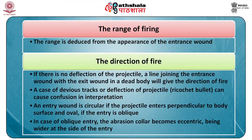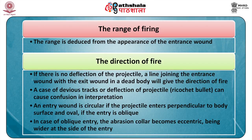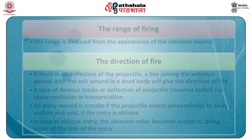The range of firing is inferred from the appearance of the entrance wound. Regarding the direction of fire: if there is no deflection of the projectile, a line joining the entrance wound with the exit wound in the dead body will give the direction of fire. Devious tracks or deflection of the projectile, as in a ricochet bullet, can cause confusion in interpretation. An entry wound is circular if the projectile enters perpendicular to the body surface and oval if the entry is oblique. In case of oblique entry, the abrasion collar becomes eccentric, being wider at the side of entry.